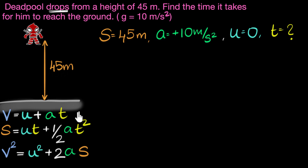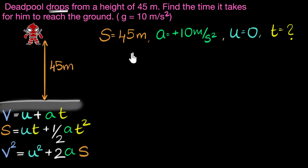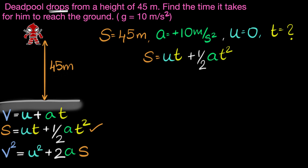Now we just have to select which equation we can use. Pause the video and see if you can choose. Let's go through each equation one by one. Can we use the first one? No, because the first one has V in it, which we don't know. Can we use the second one? We know S, we know U, we know A — we can use the second equation. What about the third one? The third one doesn't even have T in it. So we have a winner — we're going to use equation number two.